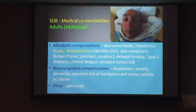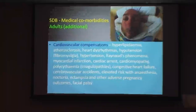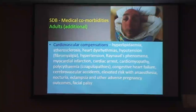Neurocognitive compensations: again, we have depression, anxiety, and dementia. Elevated workplace and motor vehicle accidents. And eclampsia and other adverse pregnancy outcomes in women — that's an important one. Who would have asked a female patient about any history of eclampsia or pre-eclampsia when having kids? We wouldn't normally do that, but we should.